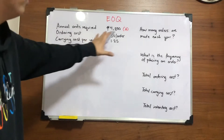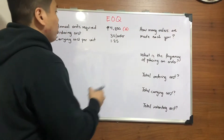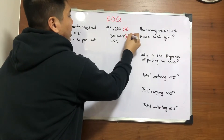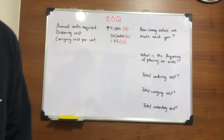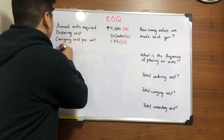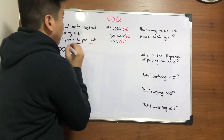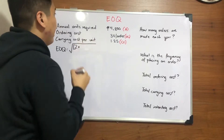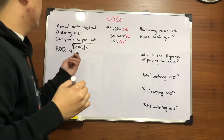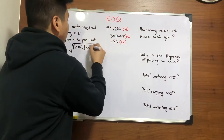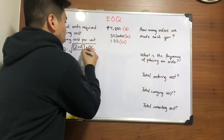Now that we've known this, we can now plot our EOQ formula. Let's label ordering cost as OC and carrying cost or handling cost as CC. Now that we know our inputs, let's place it in the formula. EOQ is equivalent to the square root of 2 times your annual units required, multiplied by the ordering cost OC, divided by your carrying cost per unit CC.